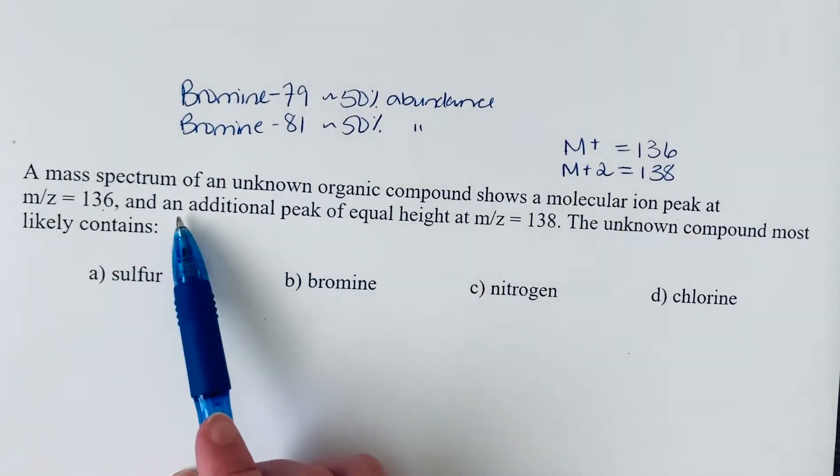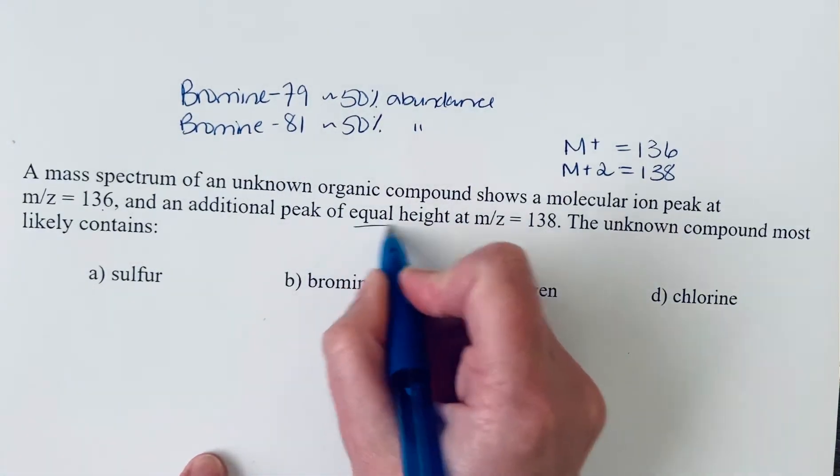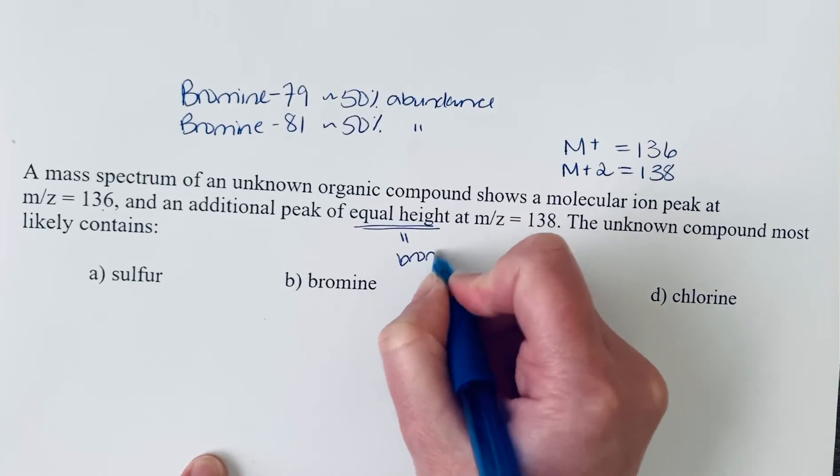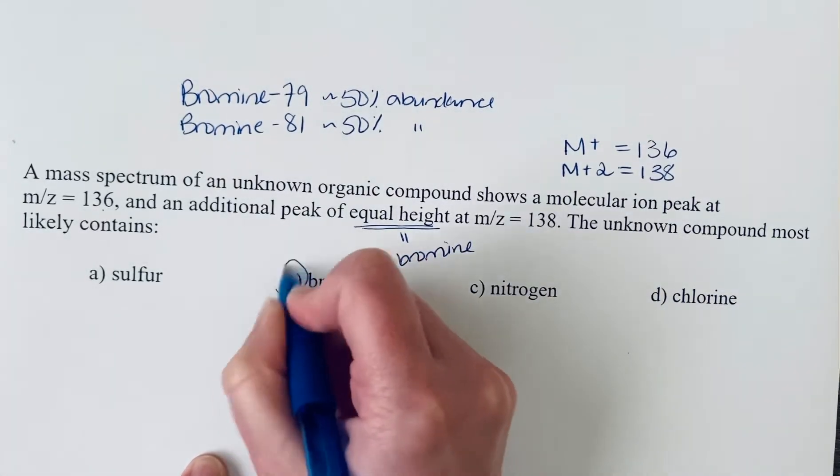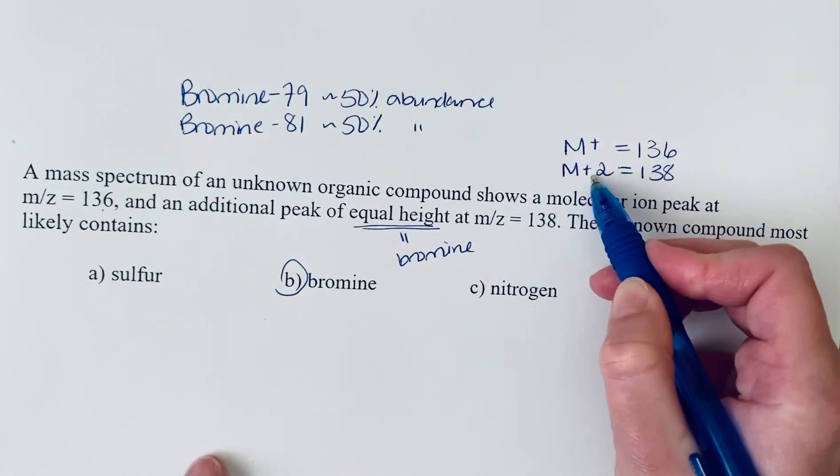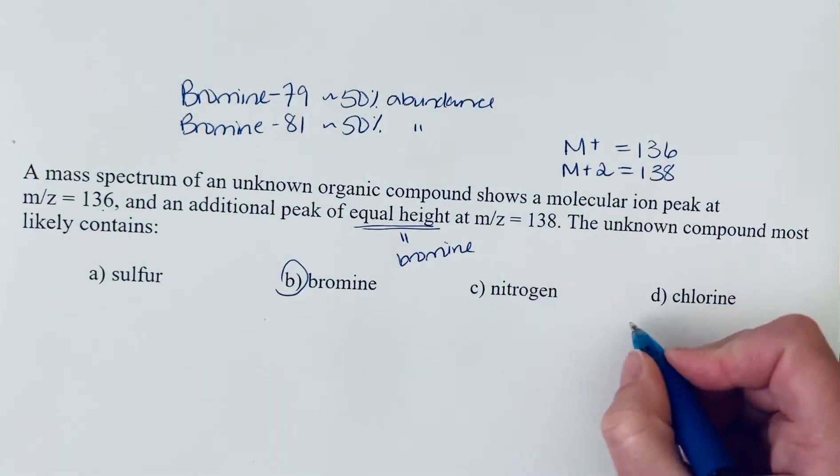This question tells us the additional peak is of equal height. The fact that it's equal height tells us we have bromine. The other halogen that shows this M+ and M+2 peak pattern is chlorine.